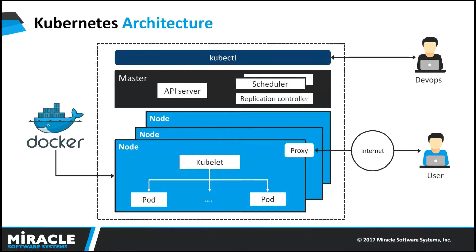A pod is a group of containers that form a logical application. For example, if you have a web application running a Node.js container and also a MySQL container, then both these containers will be located in a single pod. A pod can also share common data volumes and they share the same networking namespace. Kubernetes identifies pods via the concept of labels.